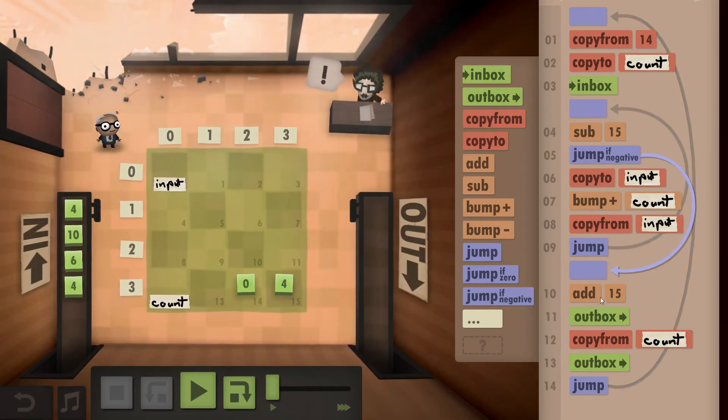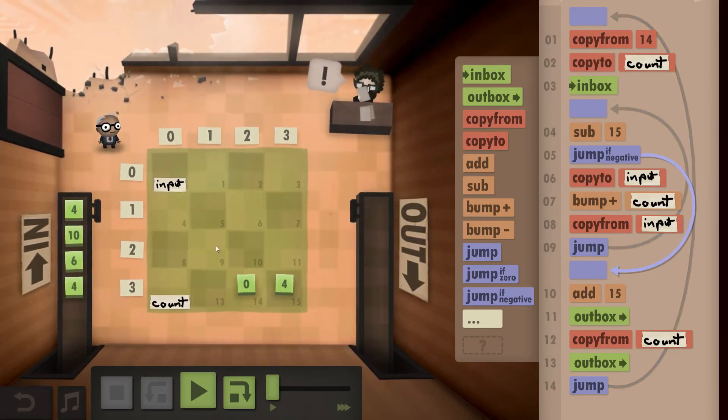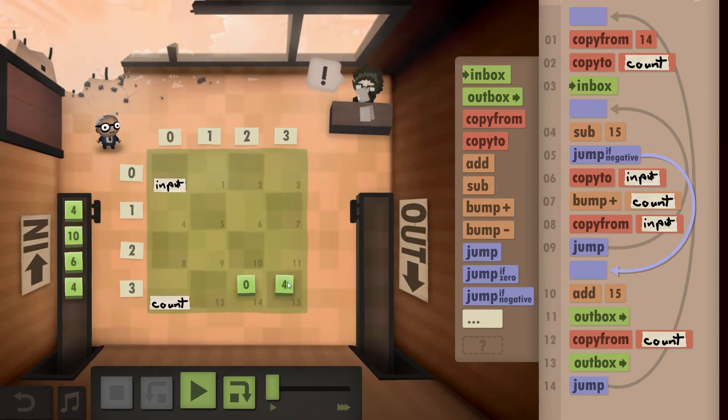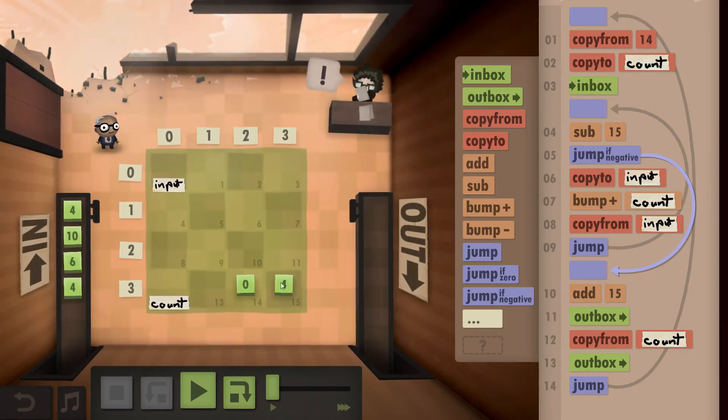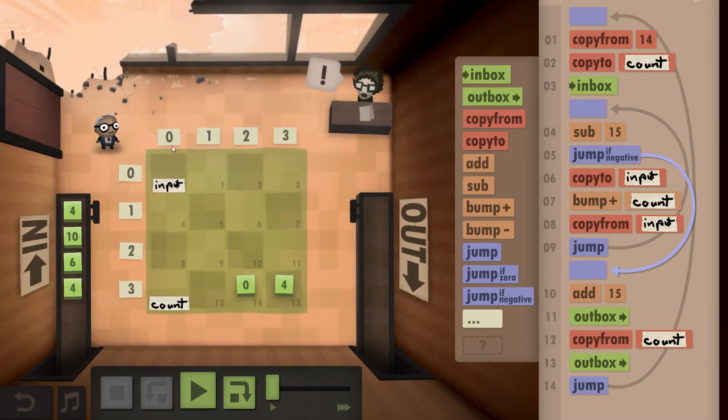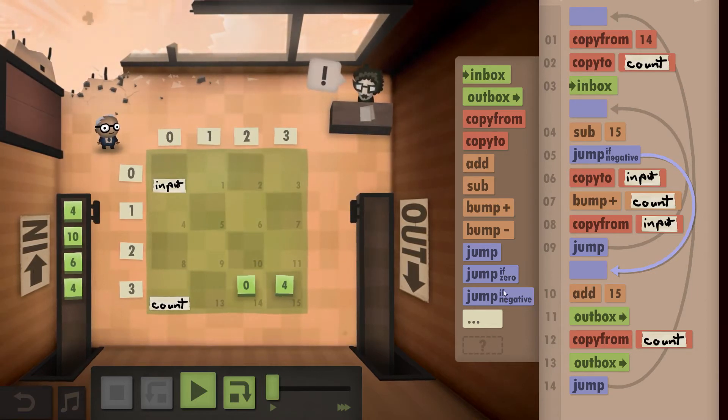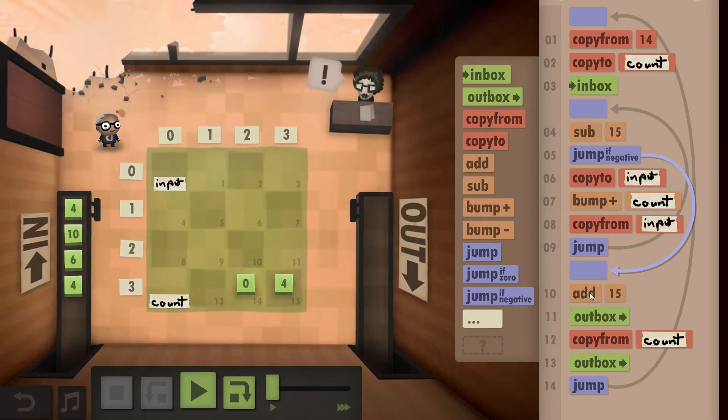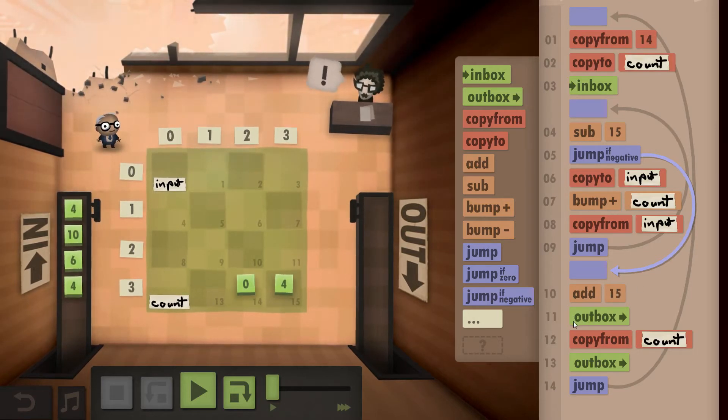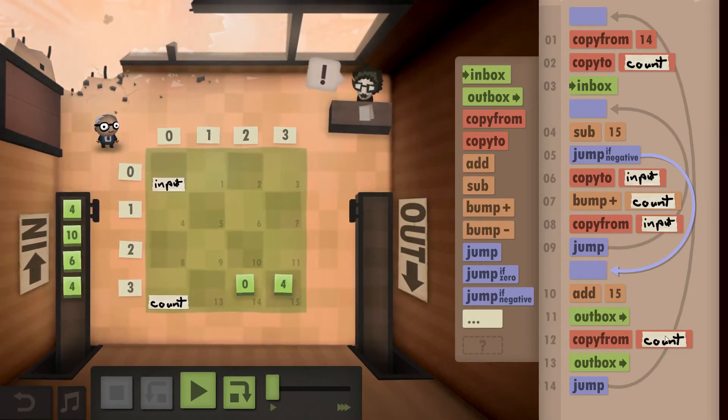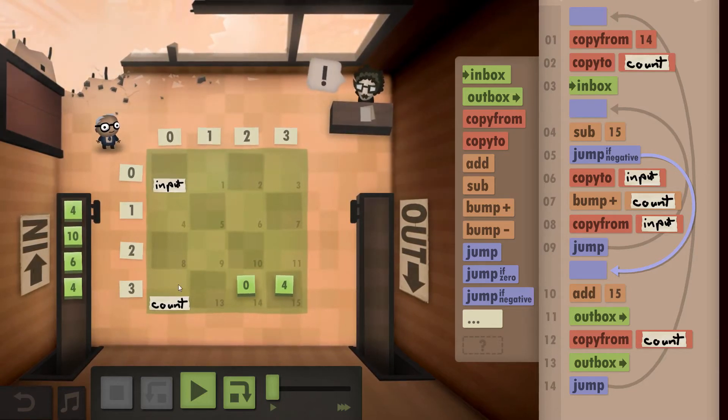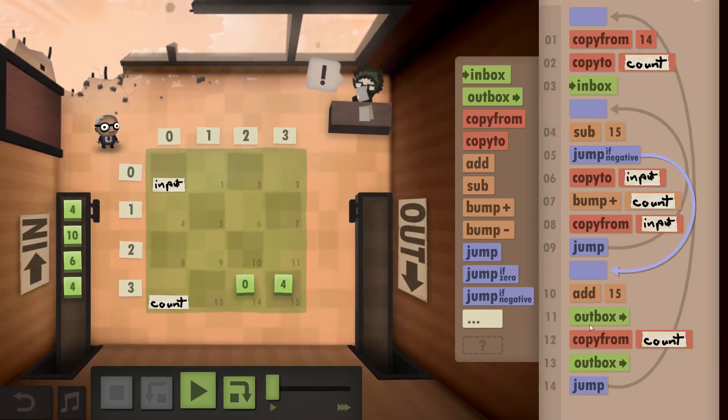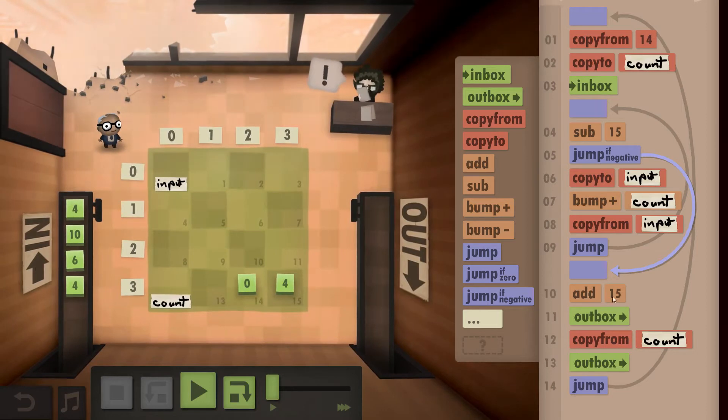Once we've reached a negative, we add the 15 back again just to get the thing that we currently have in input. We could also just copy from input, doesn't matter. To get our original number back, and then outbox, and then we copy from count, which will then hold our division result. So what we then have in the outbox is the modulo.